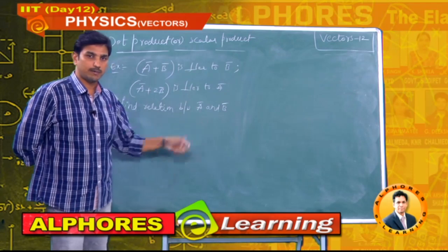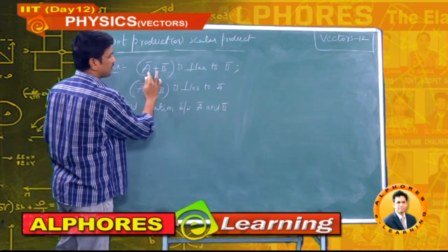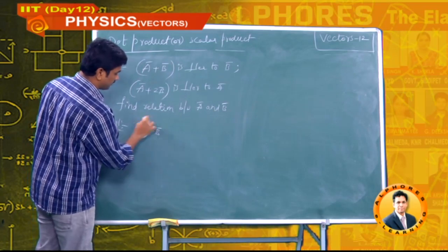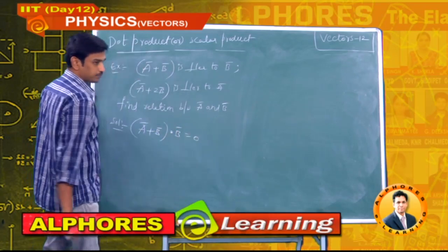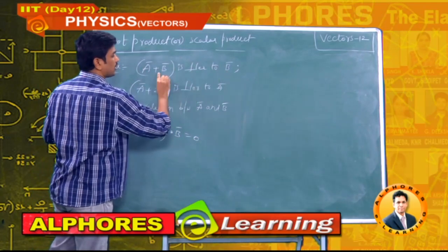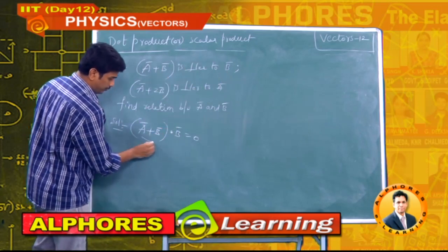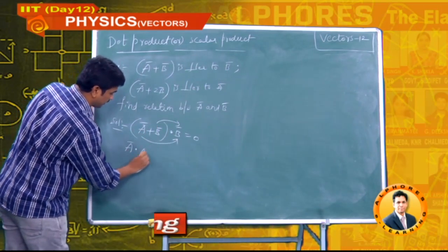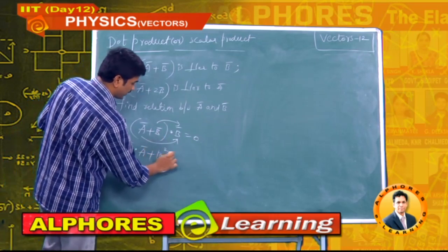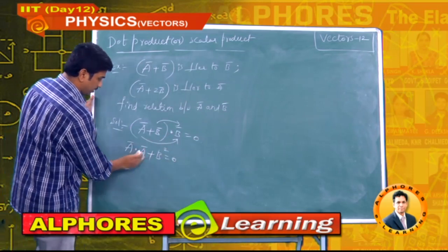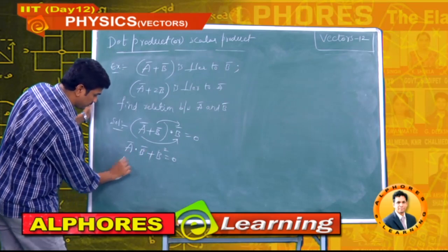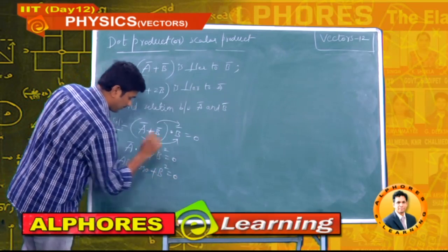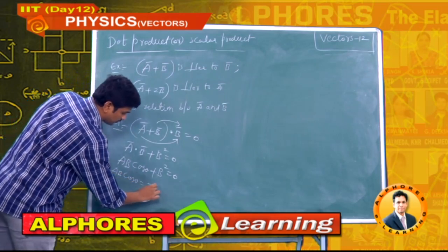Since ā + b̄ is perpendicular to b̄, their dot product equals zero: (ā + b̄) · b̄ = 0. Applying the distributive property: ā · b̄ + b̄ · b̄ = 0, which gives ABcosθ + B² = 0.